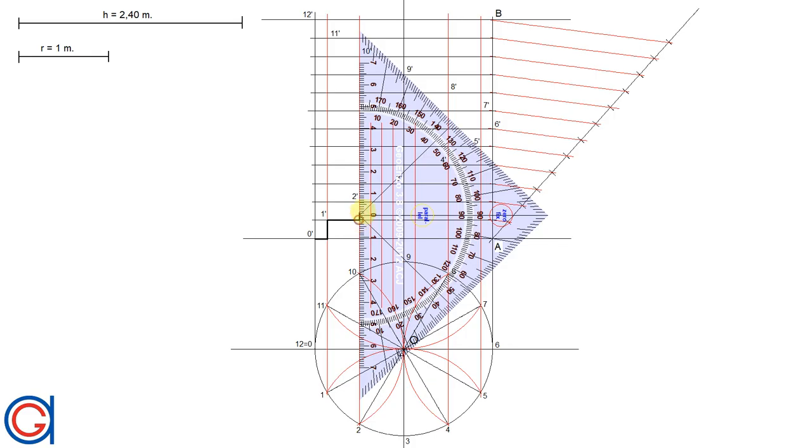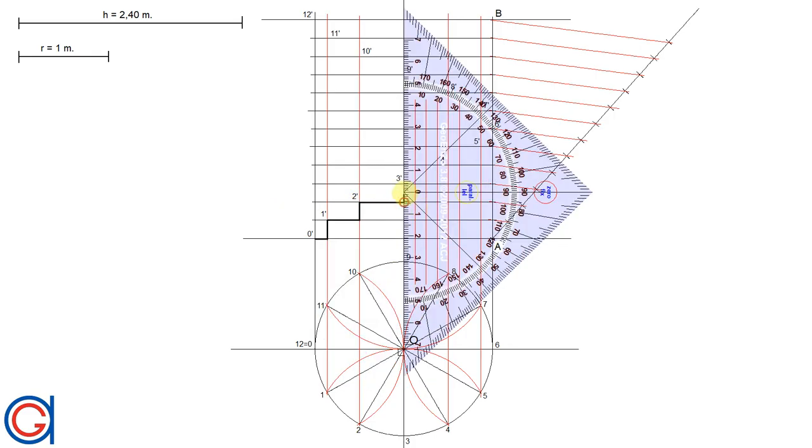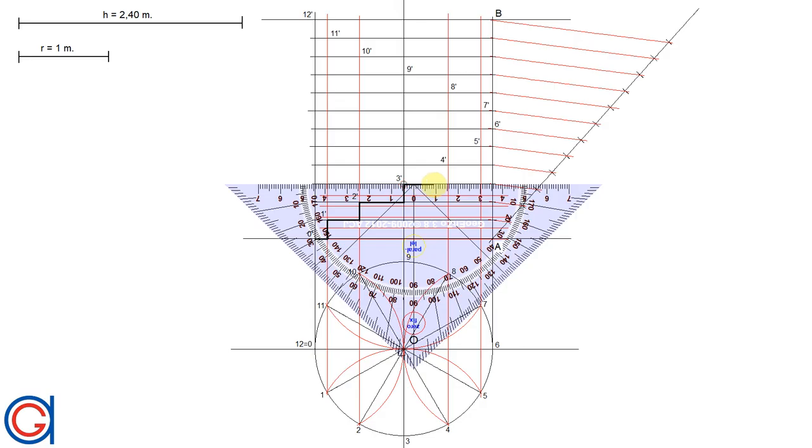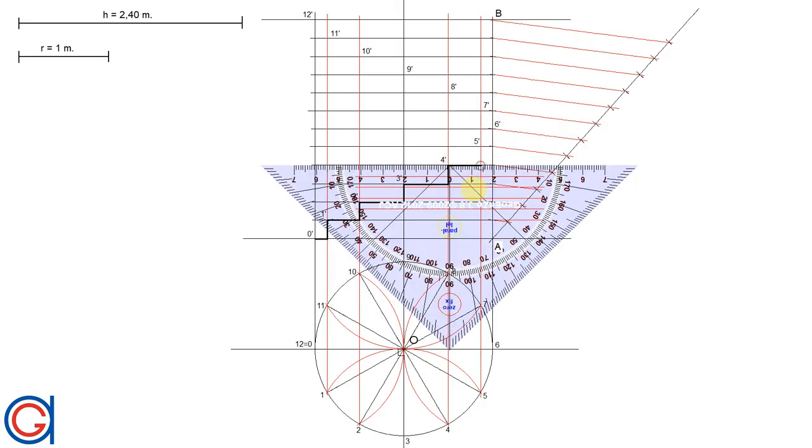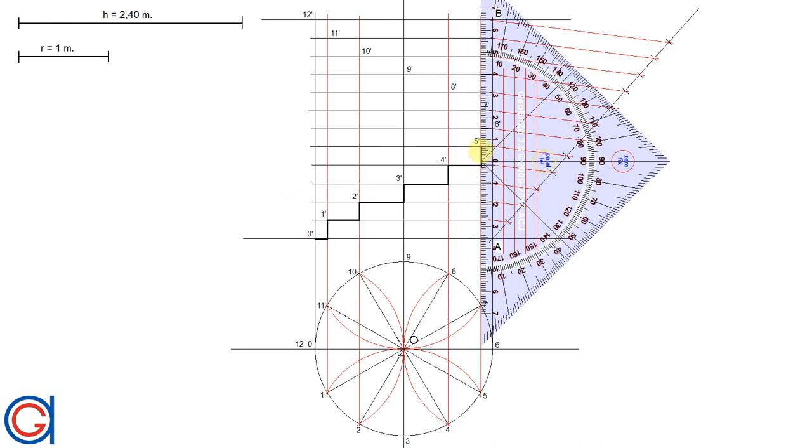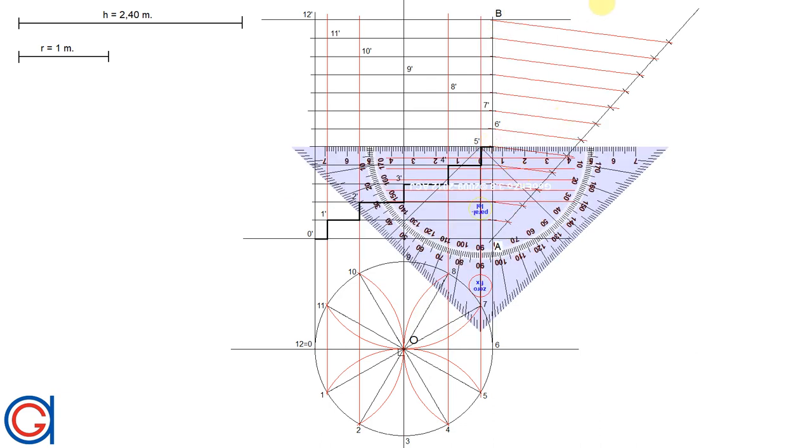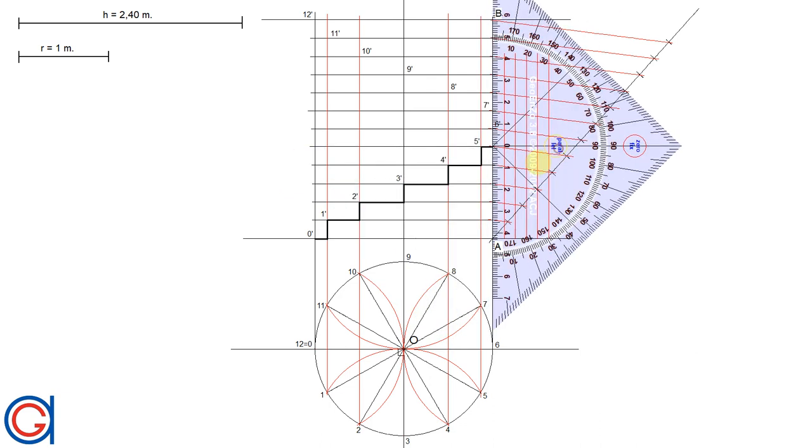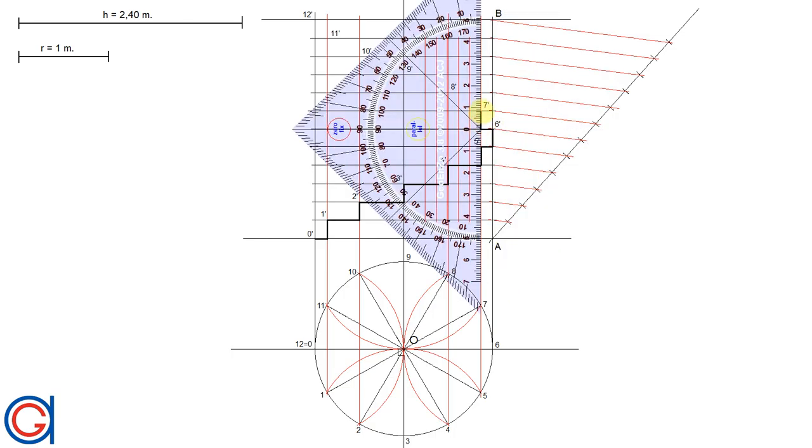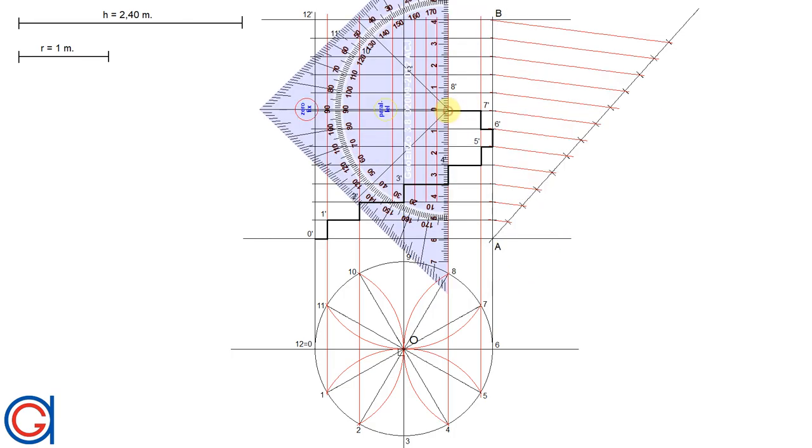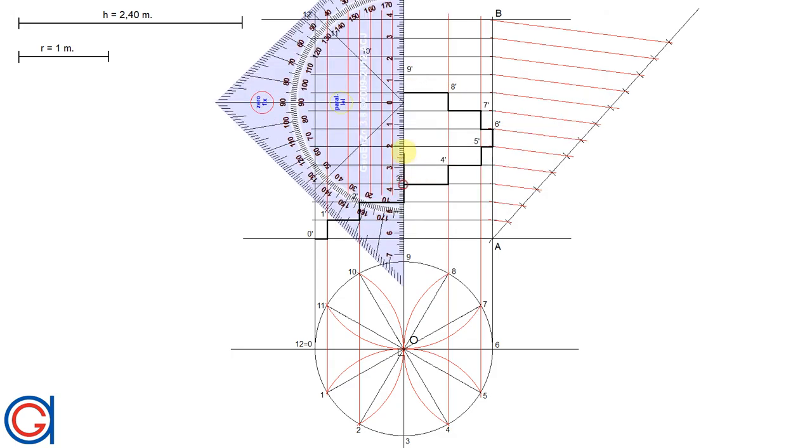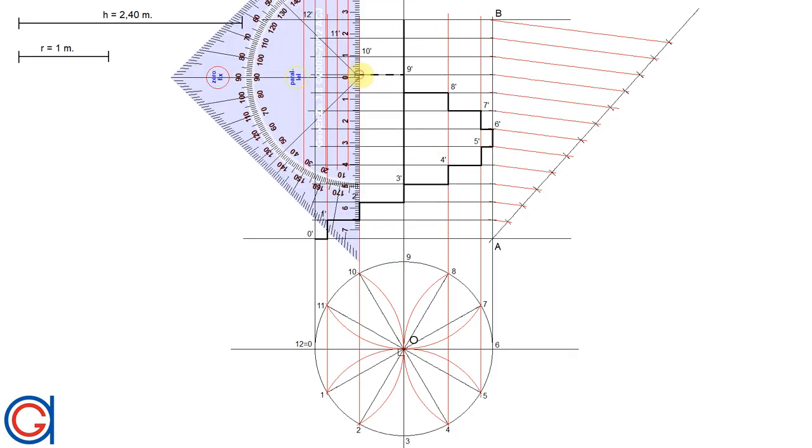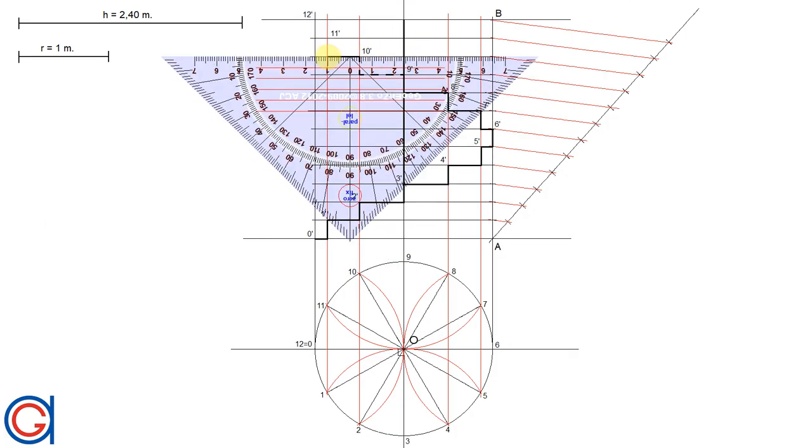And now we continue this process, stepping over to the next red line and rising up to each subsequent point through 4 prime, 5 prime, and 6 prime. And now we change direction, continuing the pattern of moving over one and rising up one through the remaining steps.